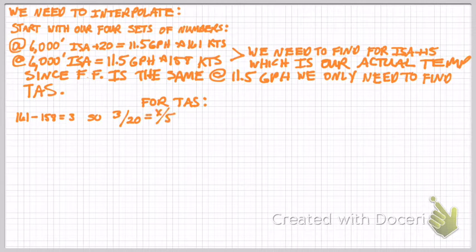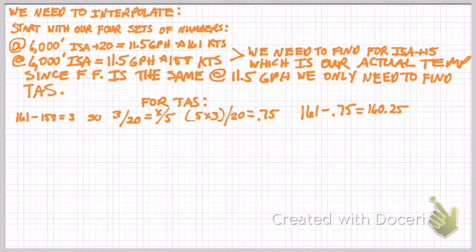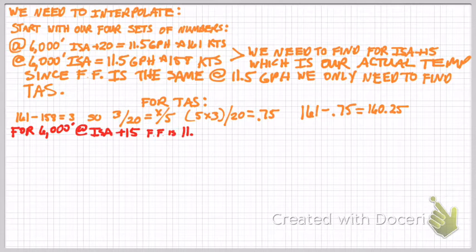For true airspeed at 6,000 feet, we do a cross-multiplication proportion. We subtract 158 from 161 to find the difference, which is 3. Then we find the difference between ISA and ISA plus 20, which is 20 degrees — that sets up the left side of the proportion. On the right side, X is above the difference between ISA plus 20 and our target ISA plus 15, which is 5. So 5 times 3 is 15, divided by 20, gives 0.75. We subtract 0.75 from 161, yielding a true airspeed of 160.25 knots at 6,000 feet, ISA plus 15. We round that to 160.3 knots with a fuel flow of 11.5 GPH.